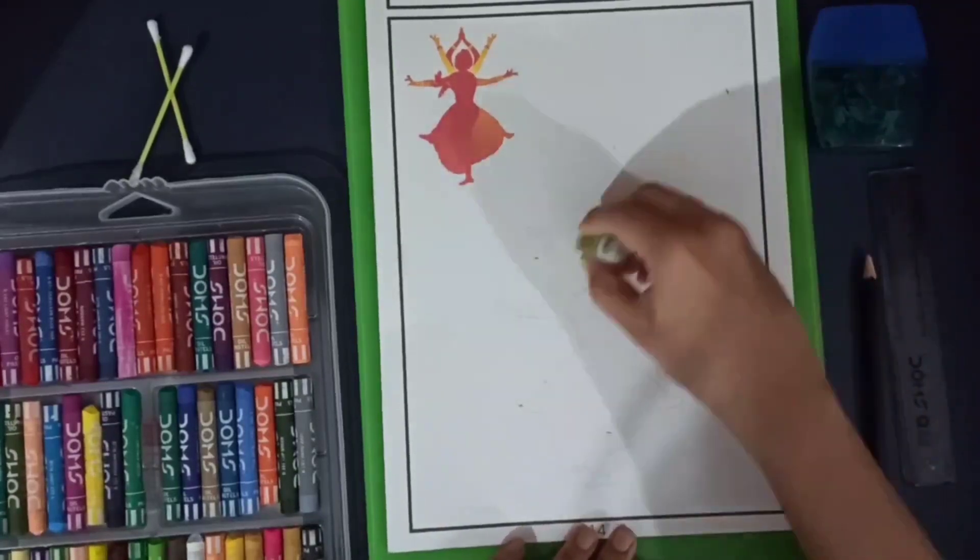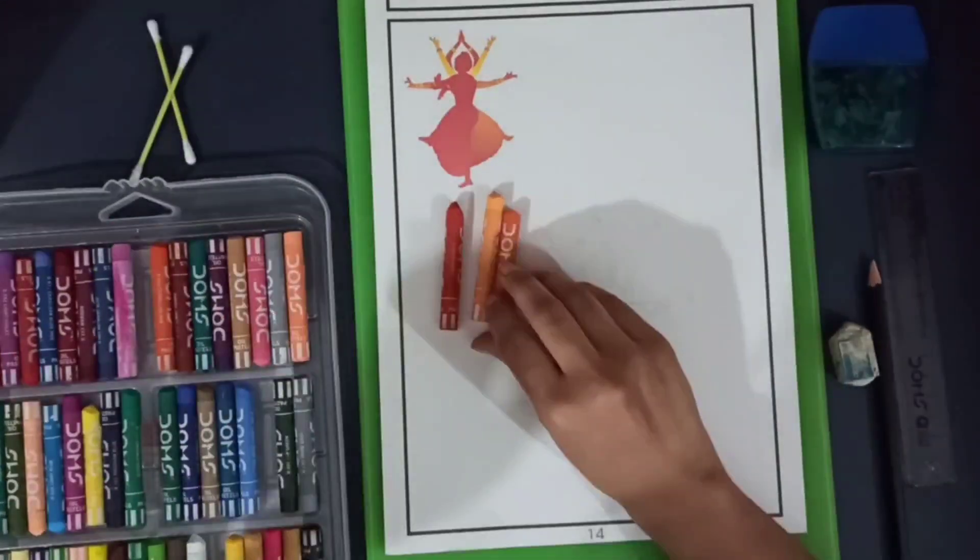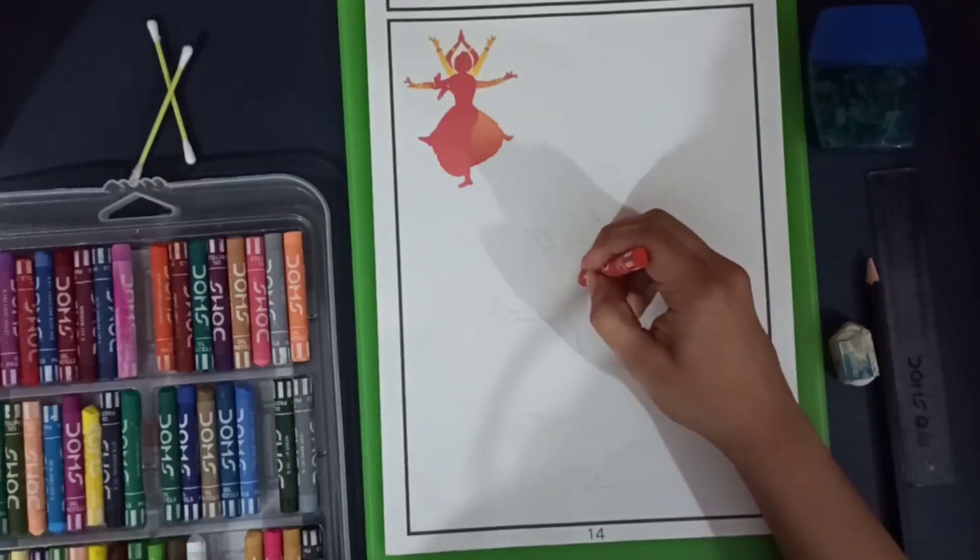I have taken four oil pastels: red, yellow, orange, and peach. First, I'm going to cover up all the red color and yellow color, and then I'll be using the orange color for the hands.